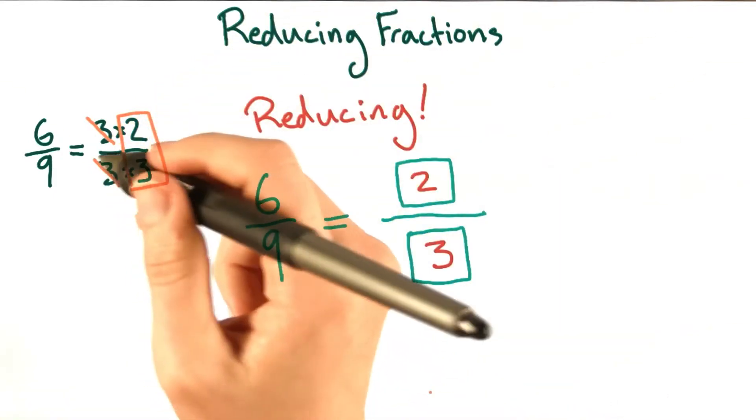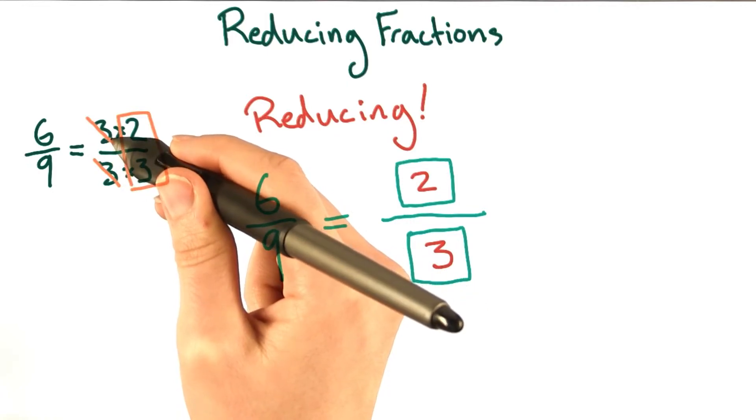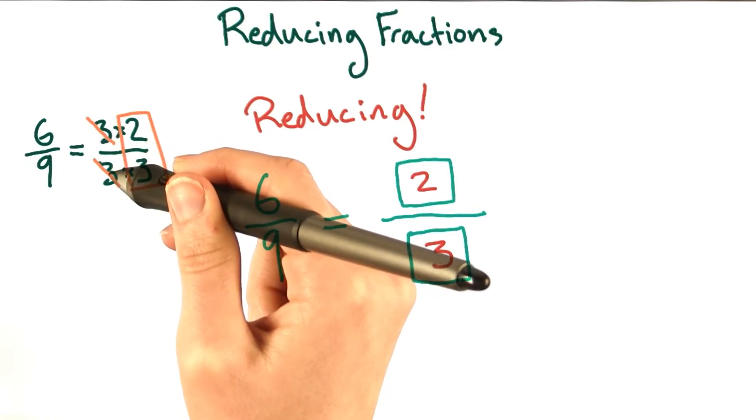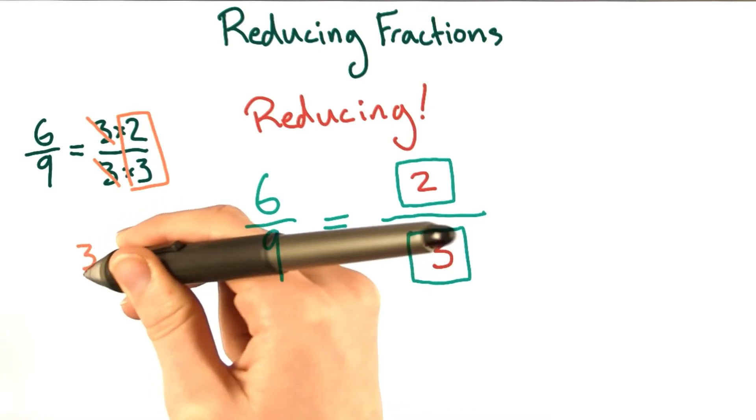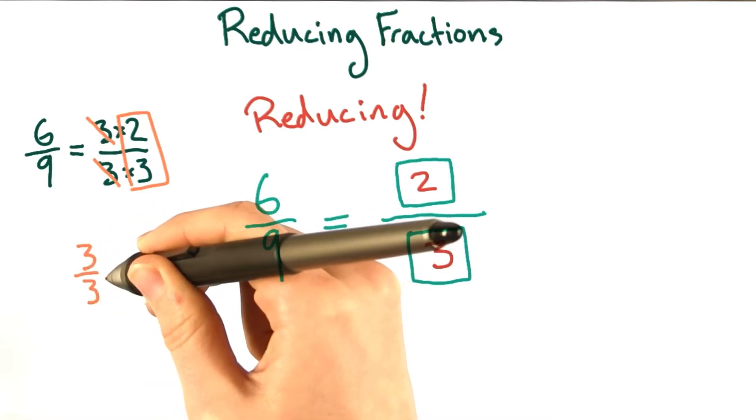This might be a good time to remind you that it's okay to do this, divide out the 3 from the top and the 3 from the bottom, because any number over itself is equal to 1. So here 3 over 3 is just the same thing as 1.